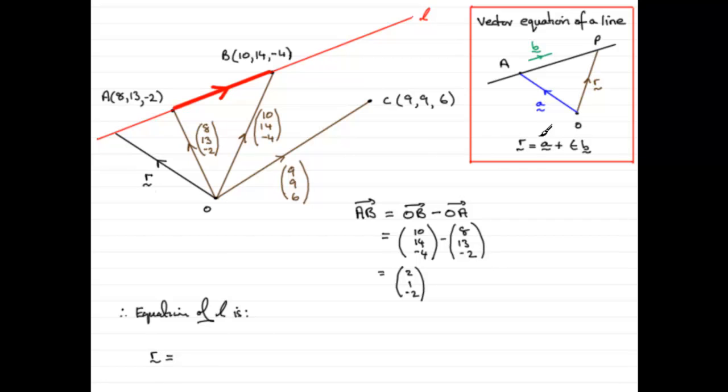And is equal to a known point on the line. Now, at this point, you've got the option of either taking A or B. It's up to you. Let's take A. If we take A, it's going to be the vector 8, 13, minus 2. And then we have plus a variable scalar quantity, which in this example here is called T. But you can use any letter you like. A lot of people use Greek letters, so we could use, say, Lambda instead.